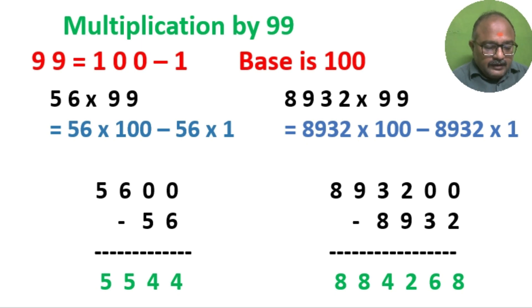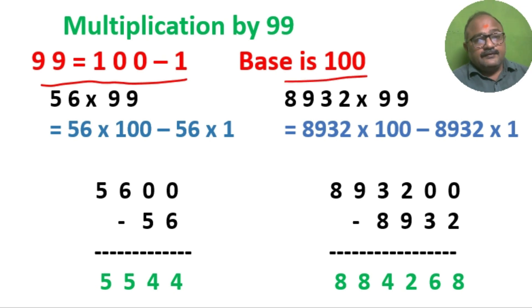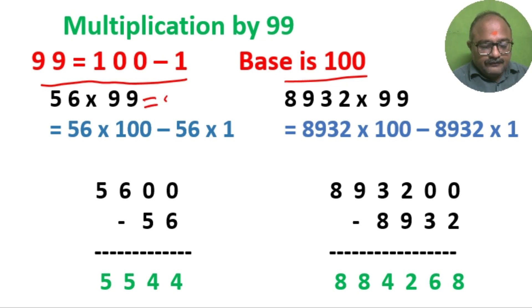99 can be written as 100 minus 1, so the base is 100. For 56 into 99, this can be written as 56 into 100 minus 1.